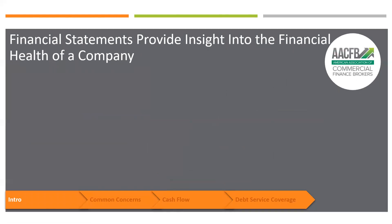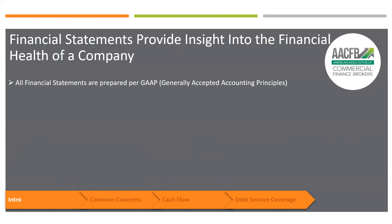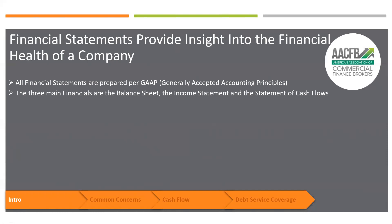Let's talk about the common concerns. Most all financial statements are prepared as per GAAP — generally accepted accounting principles — and that is the way we do accounting here in the United States. There are other ways that accounting is done in other countries, but GAAP is how they do it in the United States. There are three different styles of financials: the balance sheet, the income statement, and the cash flow statement — those are the three different components of a financial statement.